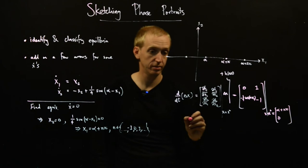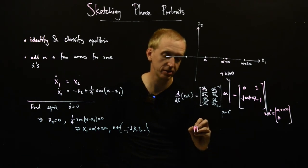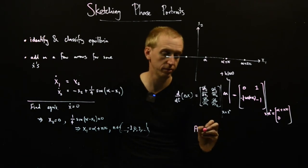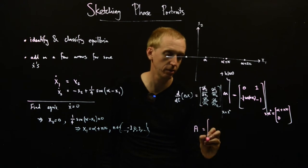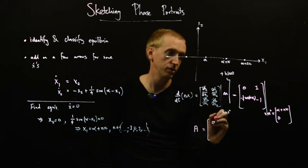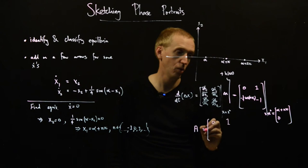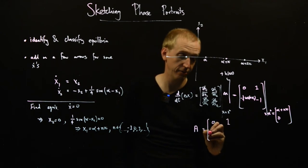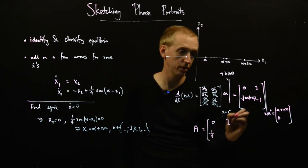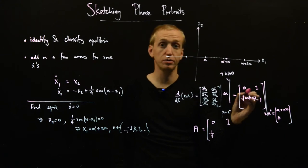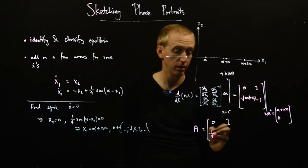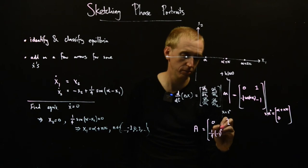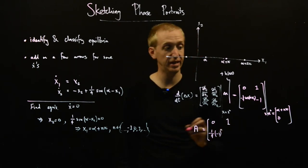So what do we get? Well, we get our A matrix for all of our equilibrium points. They look like zero, one, and then here I have minus a quarter, and this is cos of n pi. And if you simplify that a little bit, you get minus one to the n.